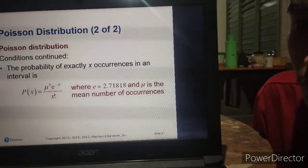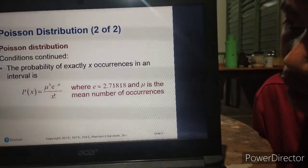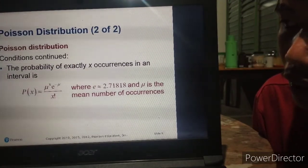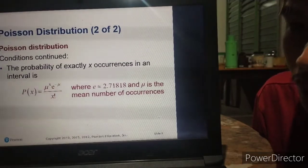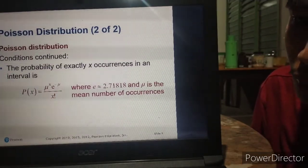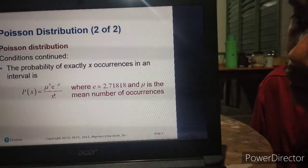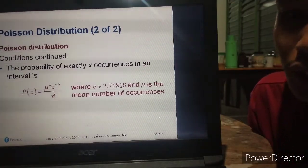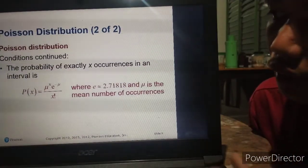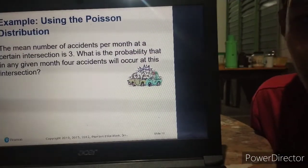Where E, or Euler's number, is approximately 2.71828, and M is the mean number of occurrences. So let's have an example.